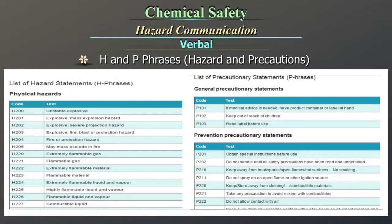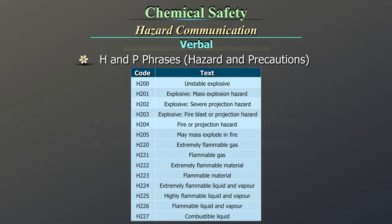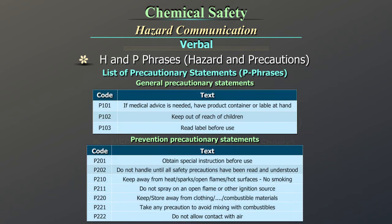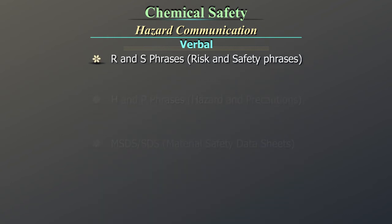H and P phrases — hazard and precautions. Now we can look at some H and P phrases, which are part of GHS. The list of H hazard phrases — H200 to H227 — shows the code with its explanation. For example, H200 indicates 'unstable explosive.' Similarly, there is a list of P phrases which are general and prevention precautionary statements. For example, P102 in general precautionary statements indicates 'Keep out of reach of children,' and P201 in prevention precautionary statements indicates 'Obtain special instructions before use.'